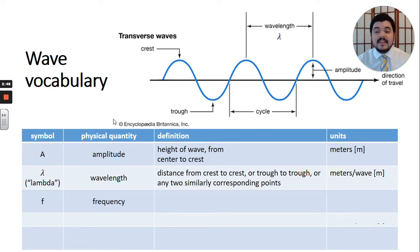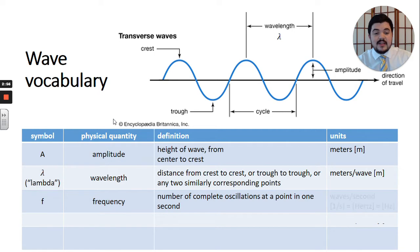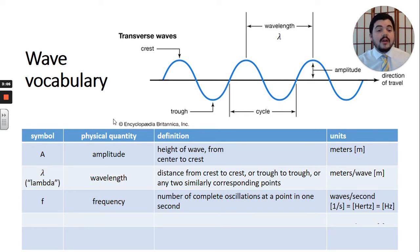We have frequency, f. Frequency is the number of complete oscillations at a point that go through in one second. It has units of waves or cycles per second, which is also one over seconds, and has the name Hertz, or capital Hz.